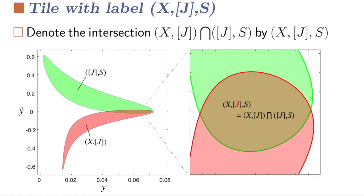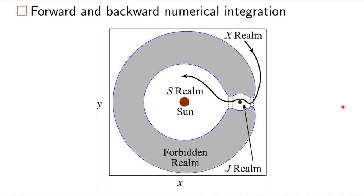So let's just zoom in on that. And we have a natural way of labeling this. So this is called tiling the phase space and labeling it. So this is XJS. It's currently in the J realm, came from X, and it's going to S. If we take that initial condition and numerically integrate it forward and backward in our equations of motion, we get the behavior that Oterma does during the first part of its journey.